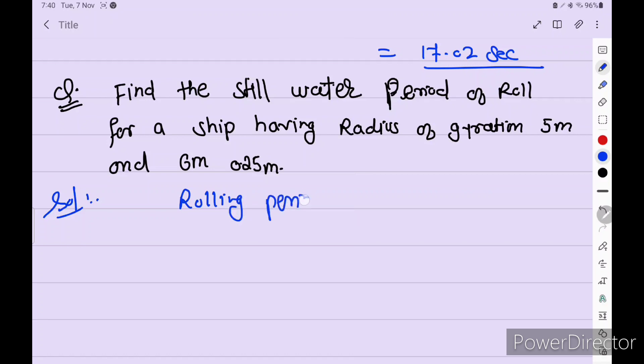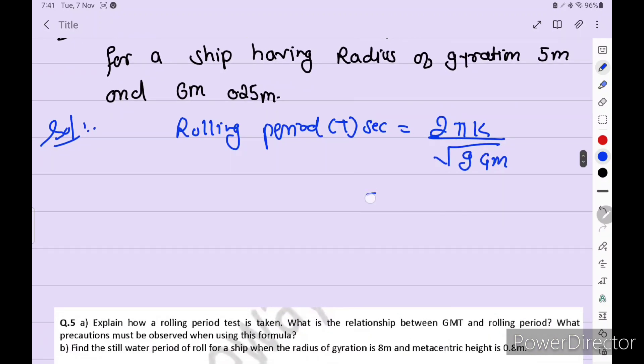Rolling period T in seconds equals 2πk divided by under root g into GM. Put the values: 2 into 3.142 into gyration 5 divided by under root 9.81 into 0.25. Is equal to 31.42 divided by 1.566 equals 20.06 seconds.